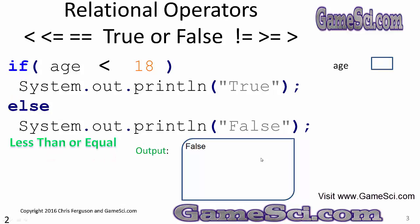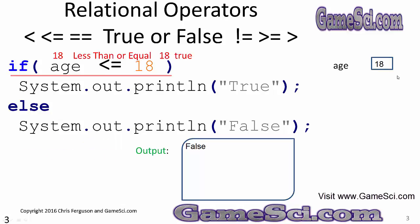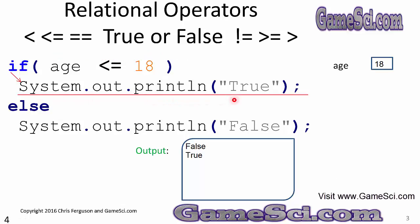Now let's illustrate the less than or equal operator. Let's put an 18 in the age variable and look at 18 less than or equal to 18. That is very much a true statement. Since they are equivalent, the equal portion will make that relational operator true. All relational operators return true or false, and in this situation this operator returns true, so it will execute the if portion and print the word true. And true shows up on our output.